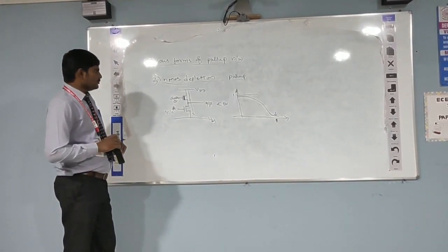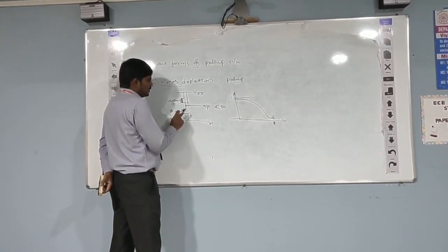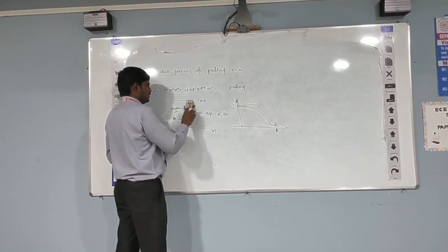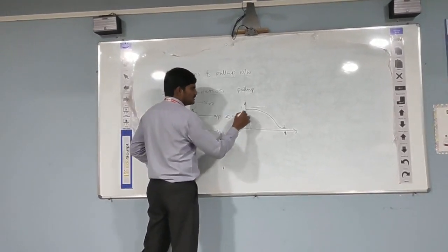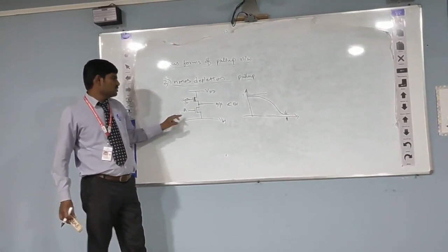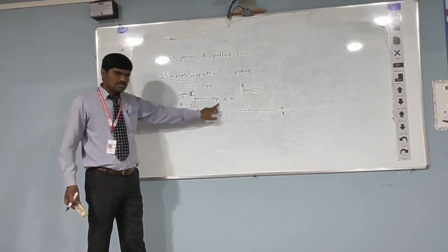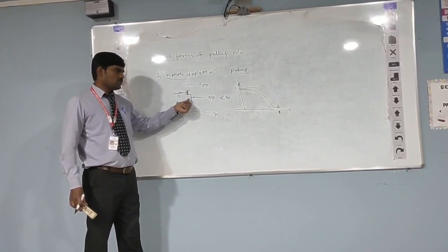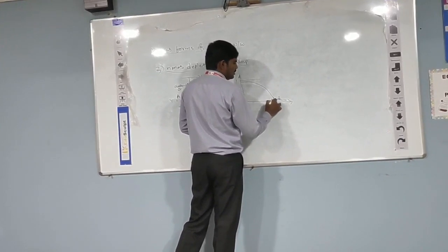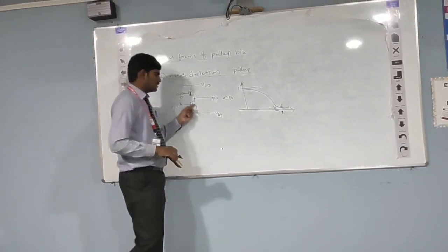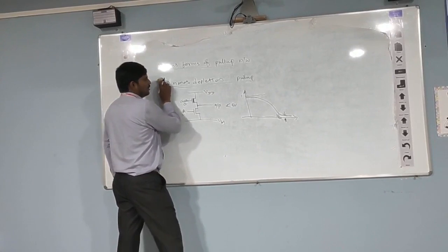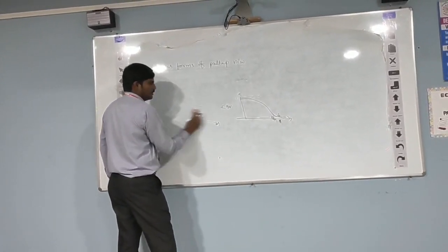So, in the depletion mode pull-up, this device is ready to conduct even when zero is supplied at the gate. When zero is supplied as input to the pull-down transistor, the output is going to be close to five volts. But when logic 1 is supplied, and we are supposed to receive zero at the output, because of the threshold voltage drop across this depletion mode transistor, the output is still not going to be exactly zero — the threshold voltage drop across this transistor will be present at the output.